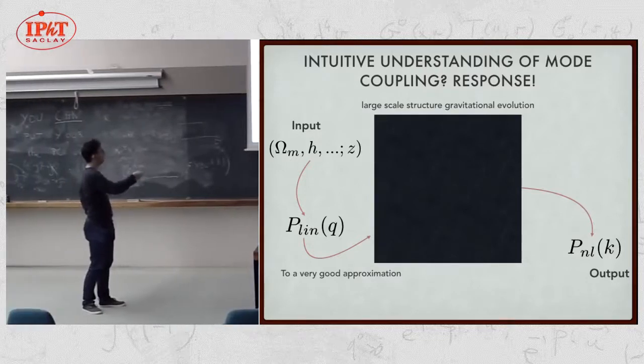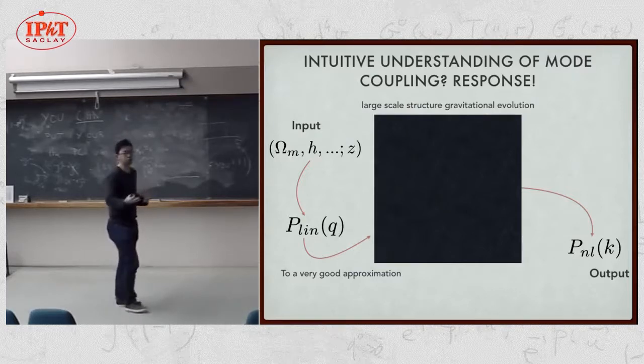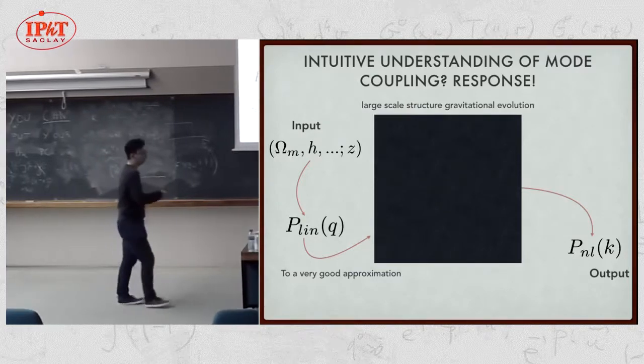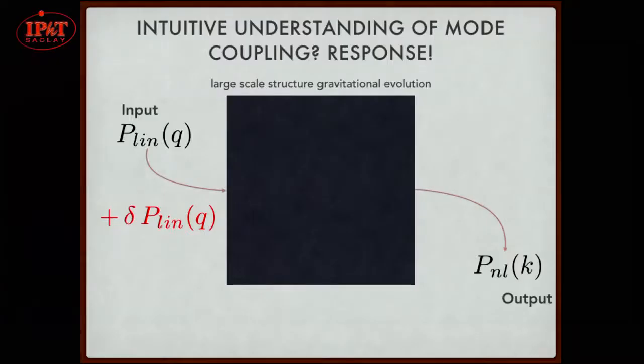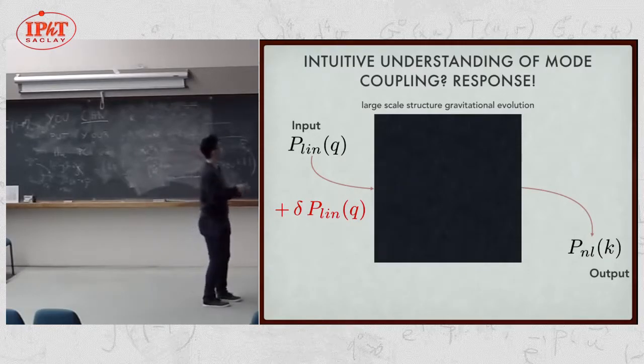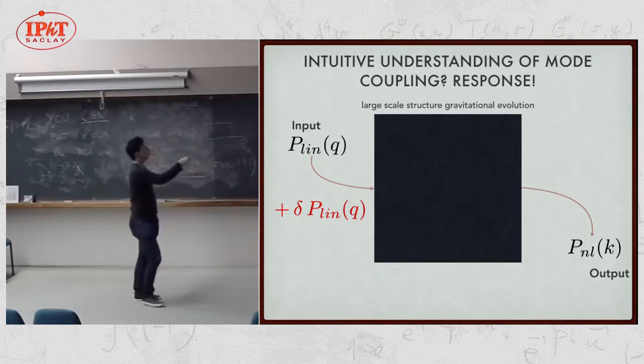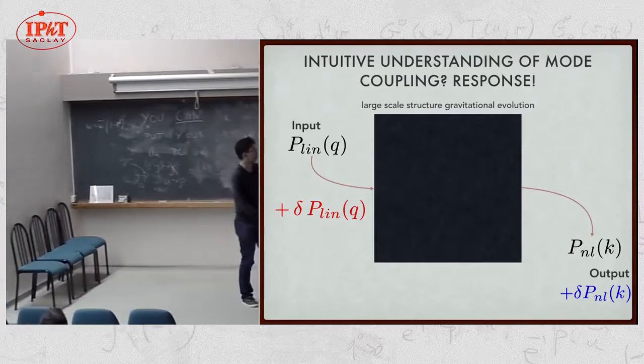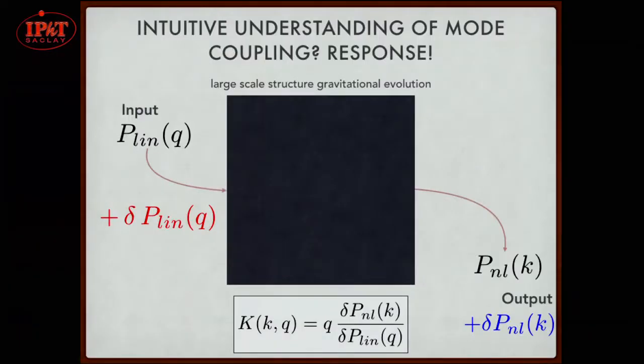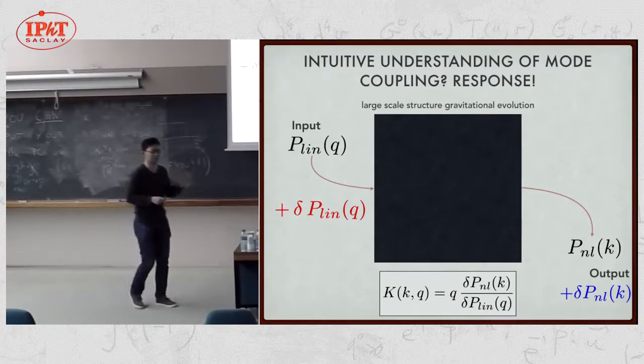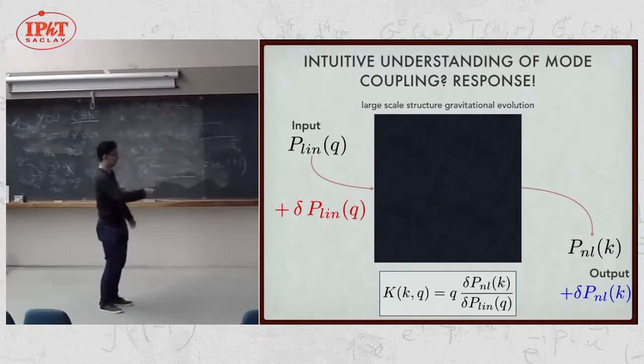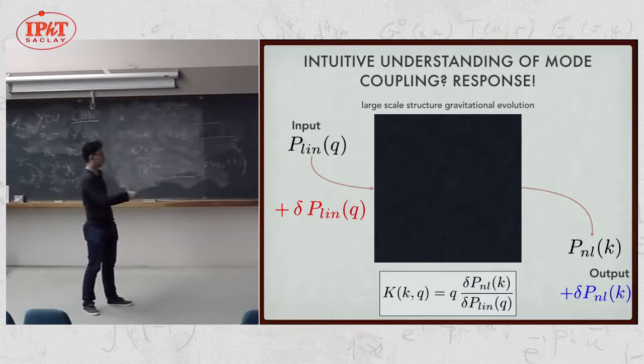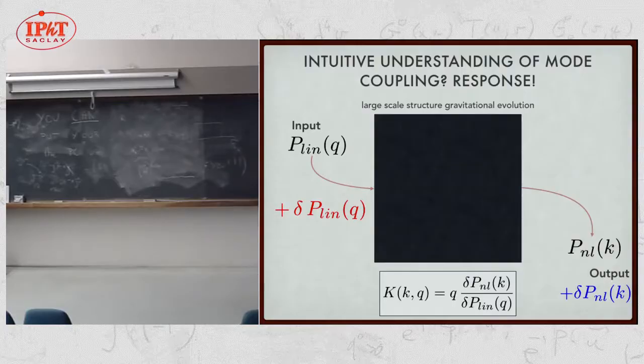It is very well known that within the Lambda-CDM framework, this is a very good approximation. Namely, the nonlinear power spectrum is a function of linear power spectrum. Once you have your linear power spectrum, you can forget about your parameters. This is at least a very good approximation. To move from here to here, you have very good tools like CAMB or CLASS or whatever. I would like to reformulate the system as follows. Input is linear power spectrum. Output is nonlinear power spectrum. Then, I would like to study the response. When I add some perturbation to the input power spectrum, I study what happens in your output nonlinear power spectrum.